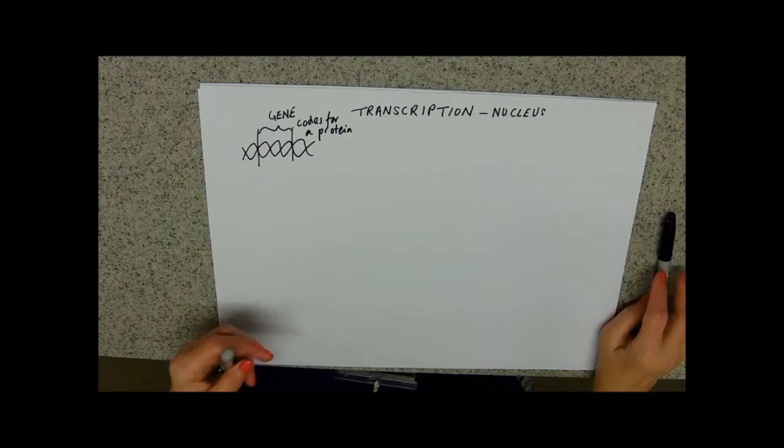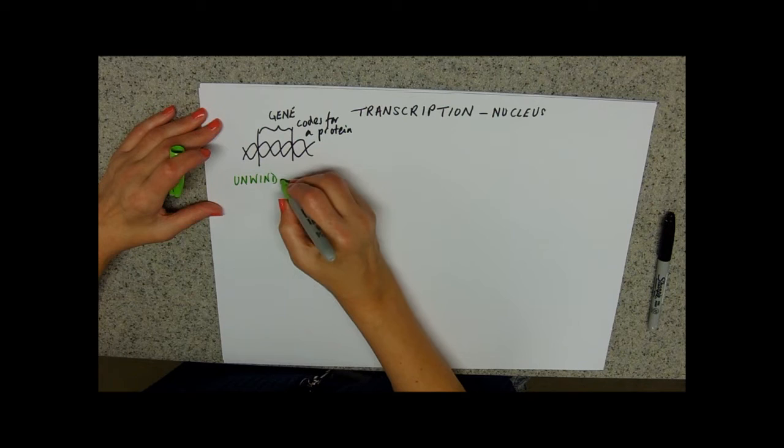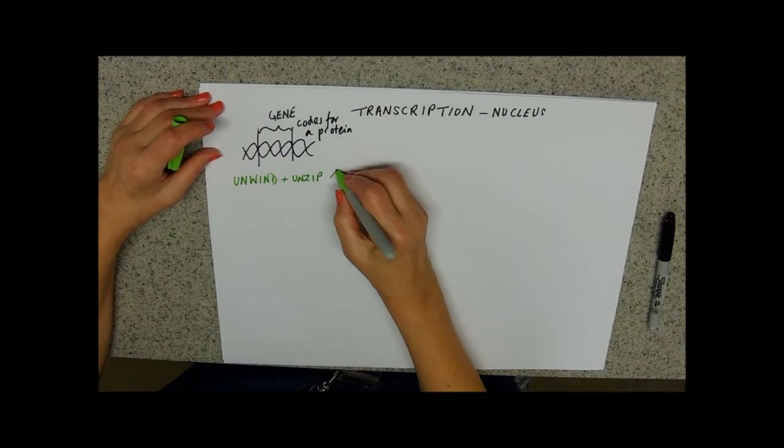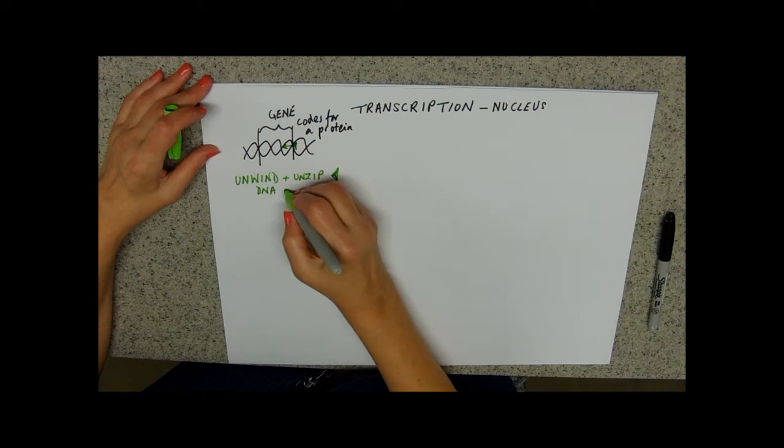And in order to access that base sequence in there, we're going to need to do a bit of unwinding and unzipping. So, our DNA is going to unwind and unzip. And you might remember this enzyme. It's going to sort of trundle its way along here.